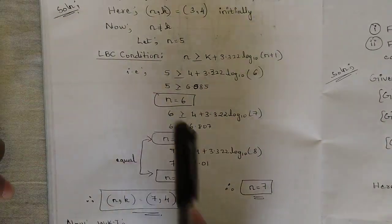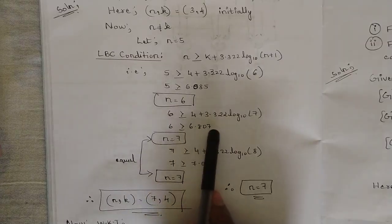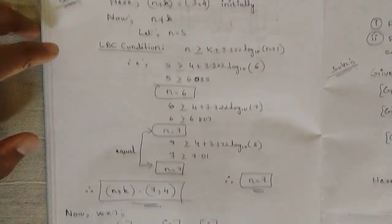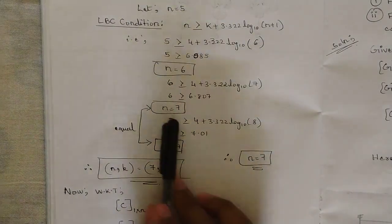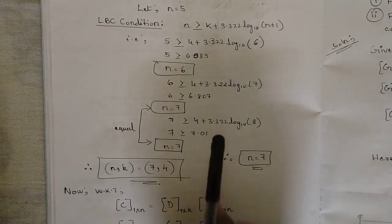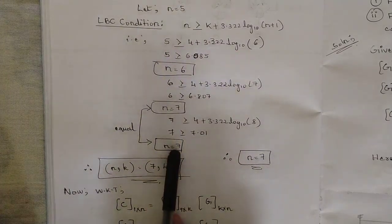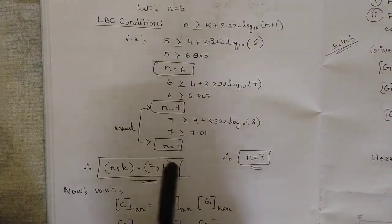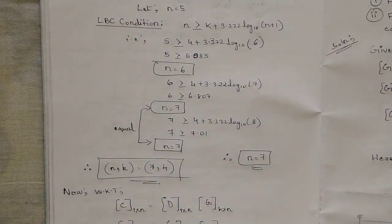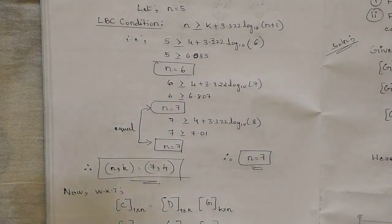For n=6: 6 ≥ 4 + 3.322 × log₁₀(7), giving 6.807, which rounds to 7 — not the same as the previous value, so one more iteration is needed. For n=7: 7 ≥ 4 + 3.322 × log₁₀(8), giving 7.01, which rounds to 7. Since this matches the previous iteration, we stop. The final value is n=7, so the code order is (7,4).